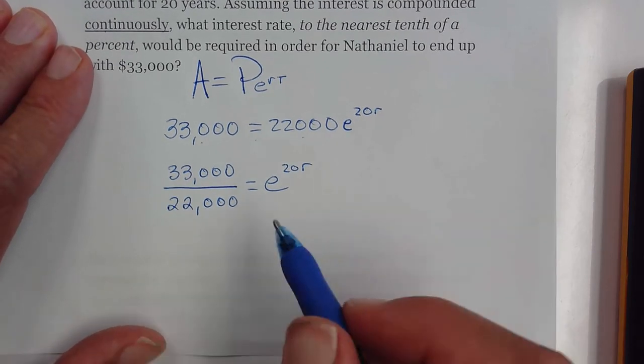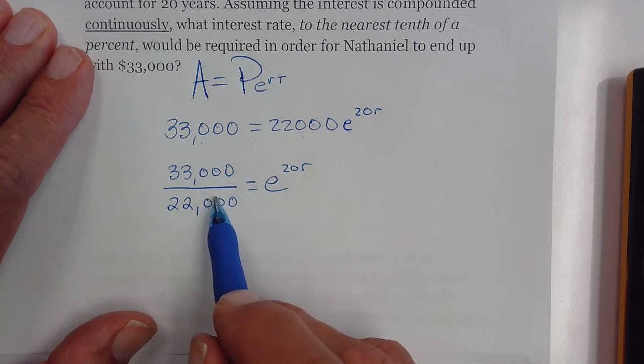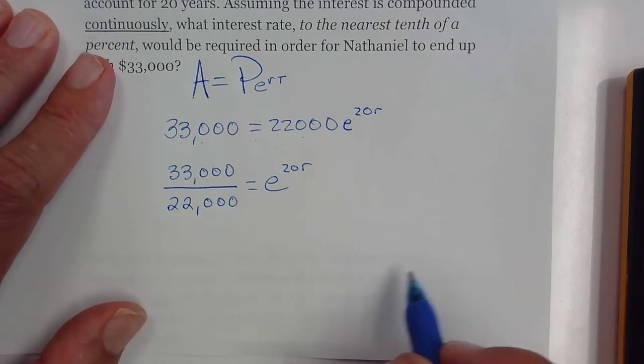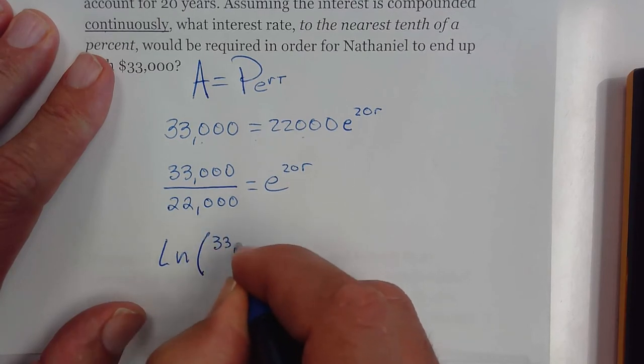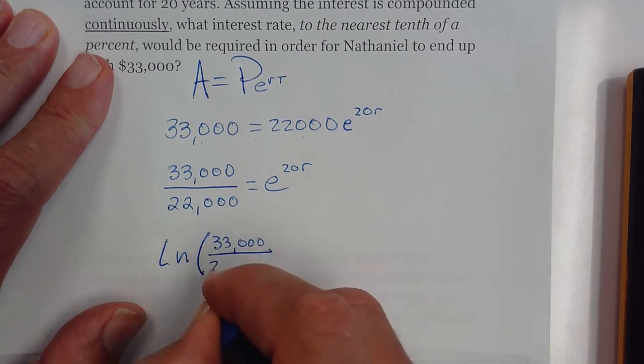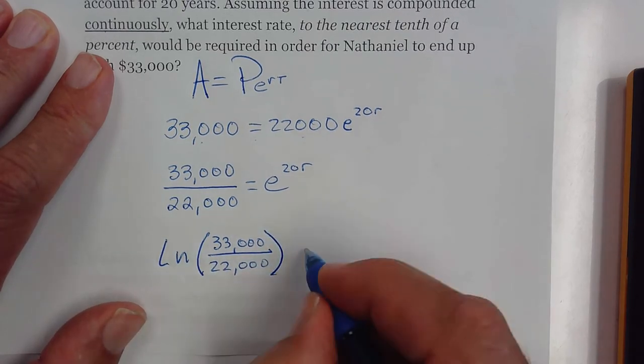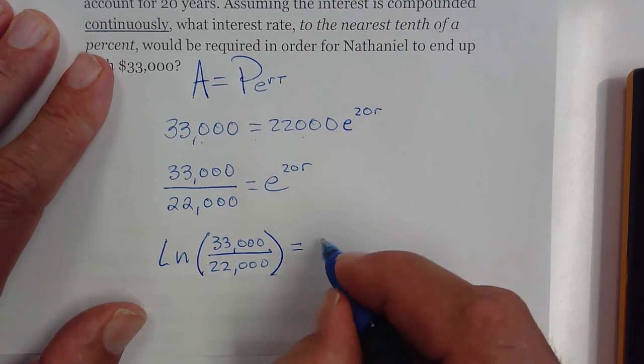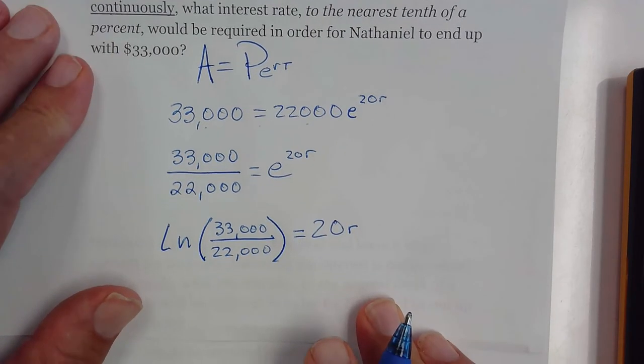And now what we're going to do is take the natural log of both sides. So you're going to take the natural log of your final amount divided by your start amount, and you set that equal to the exponent which was 20r.